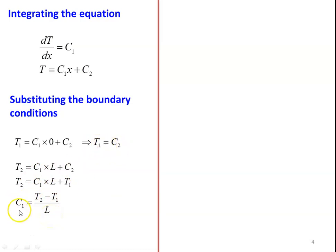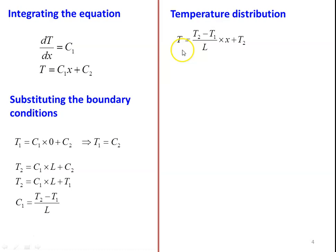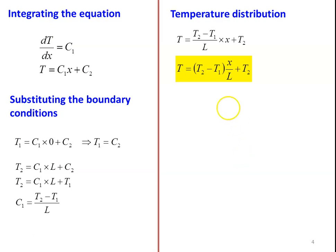So C2 = T1 and C1 = (T2 − T1)/L. Substituting back, T = (T2 − T1)·(x/L) + T1. That is the temperature distribution equation. Using this, you can find the temperature at any value of x. T1 is the temperature on the left side, T2 on the right side, L is the length of the slab, and the only variables are x and T. T is a function of x — substitute different values of x to get the temperature at that position. This is the temperature distribution equation for a simple slab.